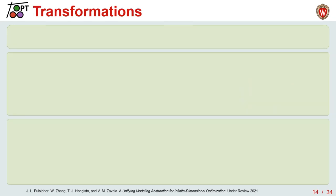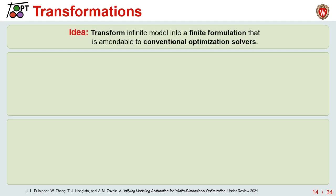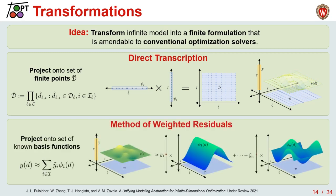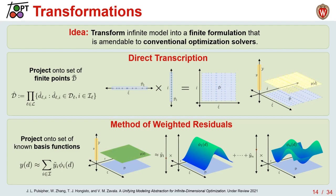Now that we can characterize an infinite dimensional model, we have to go about solving it. We consider transformations that take an infinite model and convert it into a finite formulation amendable to traditional optimization solvers. This is most commonly done via direct transcription, developing discretization points to project our problems in terms of finite point variables. However, because we've generalized our characterization independently, we could also use techniques like the method of weighted residuals, projecting decision functions onto known basis functions and expressing the optimization in terms of finite coefficient variables.